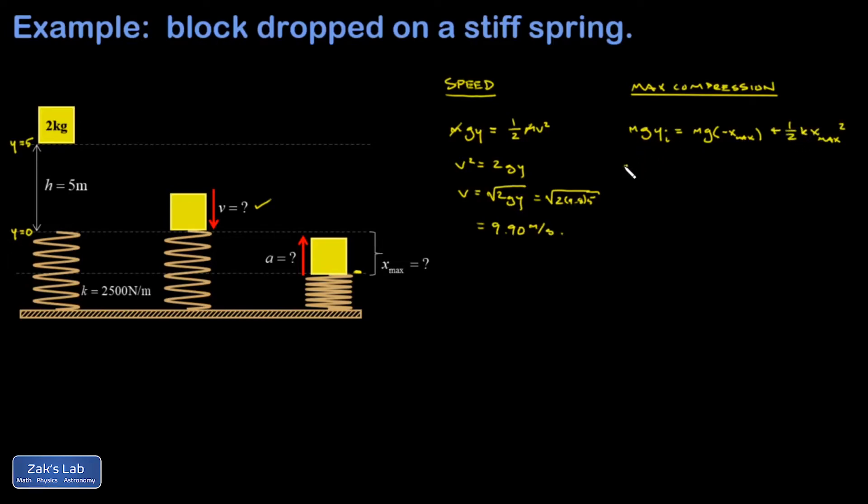So plugging numbers into this, I have 2 times 9.8 times 5 equals 2 times 9.8 times negative x max plus one half times 2,500 x max squared. And I'm going to clean things up and move it all to one side of the equation because I'm going to have to use the quadratic formula on this. And when I do that, I get 1250, just moving everything to the right-hand side.